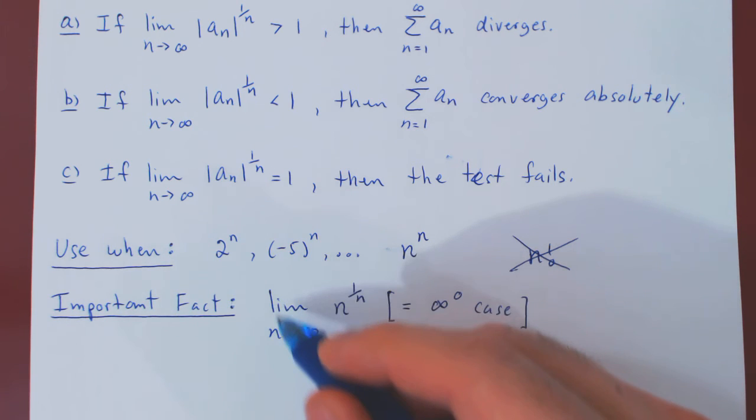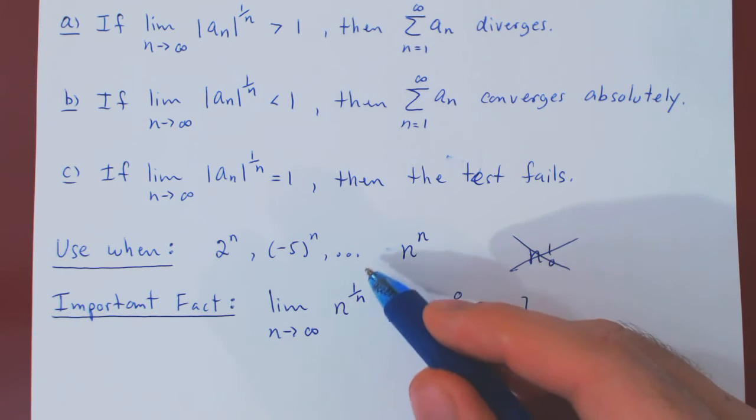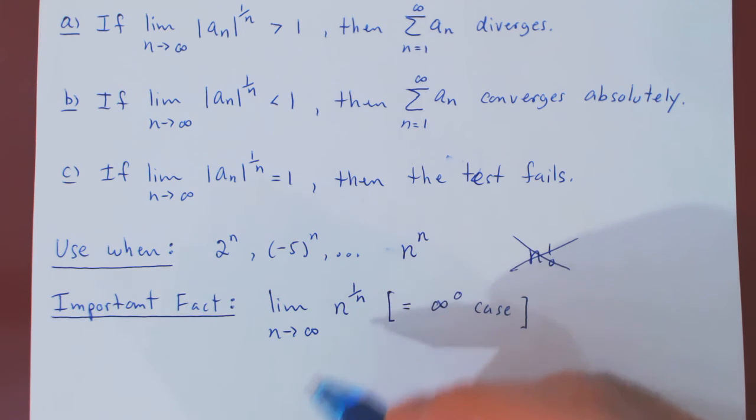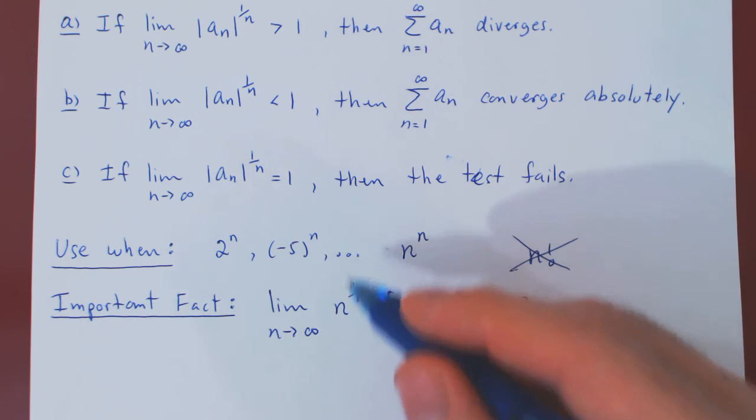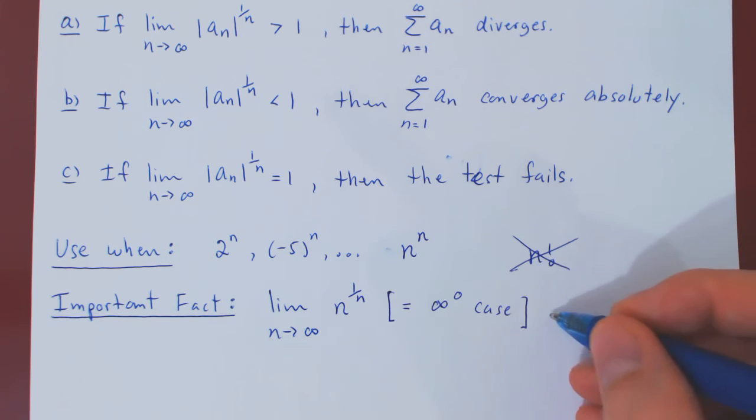But if you recall here, you can figure this limit out by taking the ln of the limit, and then you can use L'Hopital's rule, and you will find that the result is 0. And if the ln of something is 0, well, the expression must be equal to 1.